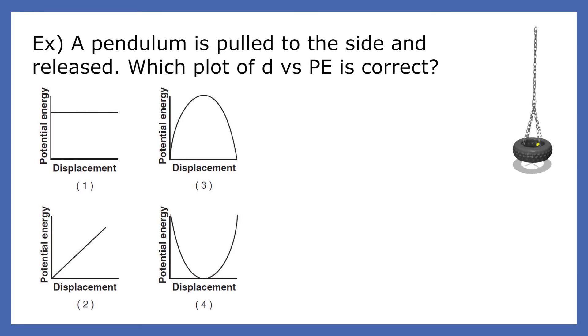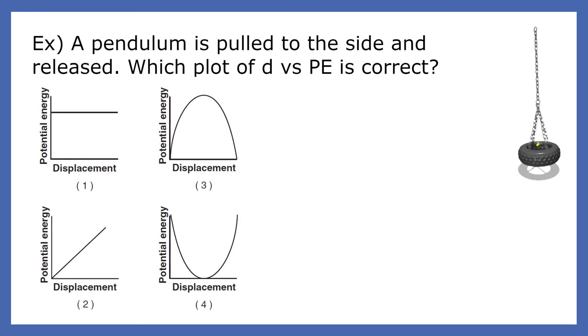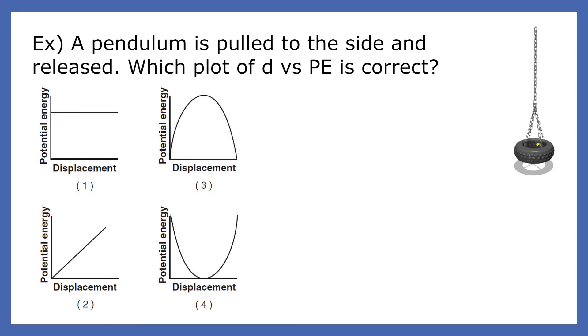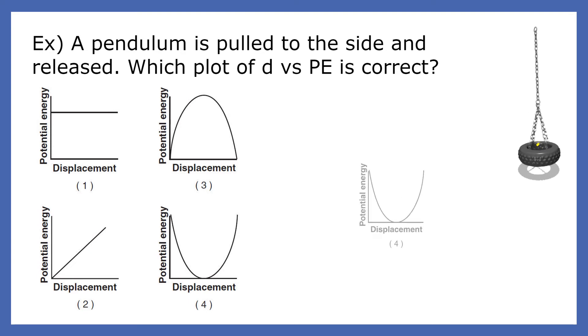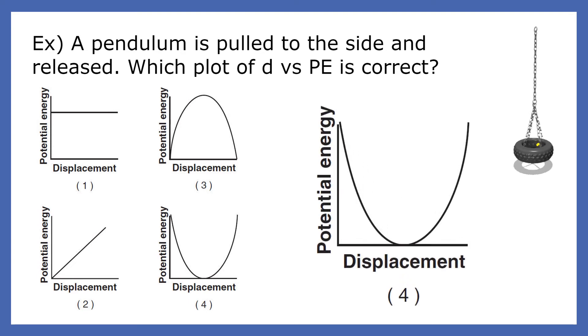A pendulum is pulled to the side and released. Which plot of displacement versus potential energy is correct? Since the potential energy of a pendulum is greatest at the ends of the swing, the answer is choice 4.